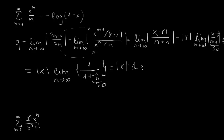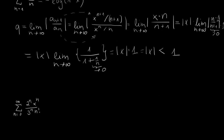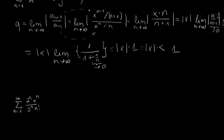So our Q equals |x|, and for convergence this must be smaller than 1. This means x must satisfy |x| < 1. Therefore the radius of convergence is 1. It's important to know that your x values should be smaller than this boundary.